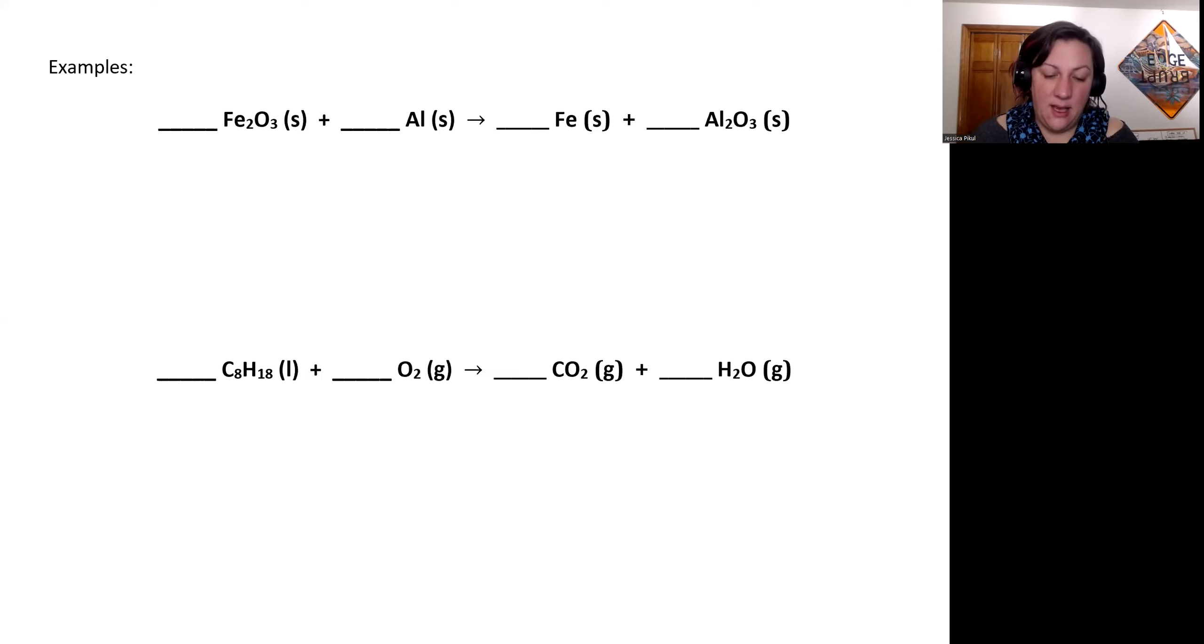So looking at this, I can see that my oxygen is in just one reactant and product, same with my iron and my aluminum. So it doesn't really matter where I start, but I'm going to start with my iron. So I have two iron on my reactant side and I have one iron on my product side.